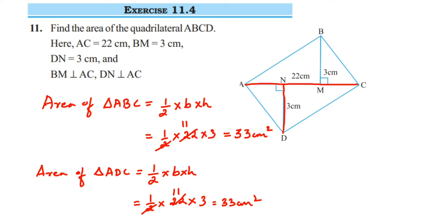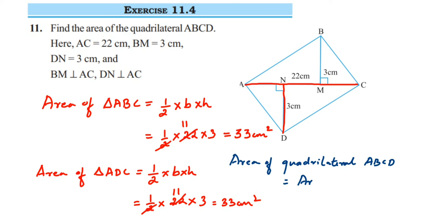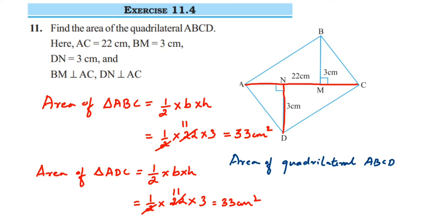Now we have to find the area of the whole quadrilateral ABCD. Area of quadrilateral ABCD is equal to area of triangle ABC plus area of triangle ADC, which is 33 plus 33, equal to 66. So the area of quadrilateral ABCD is 66 cm².